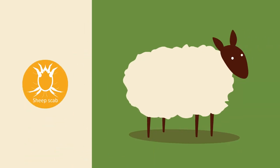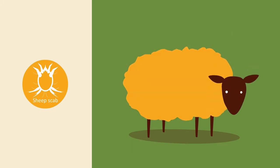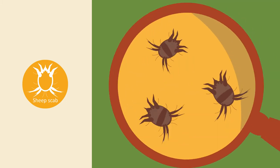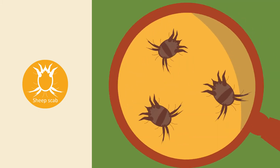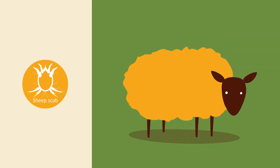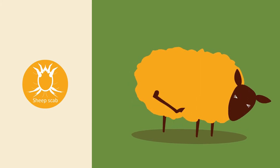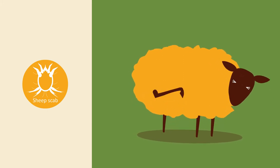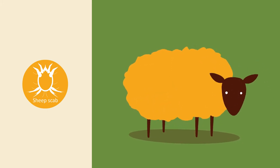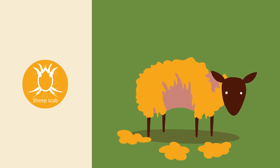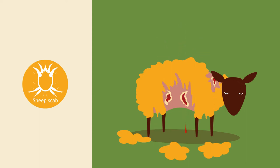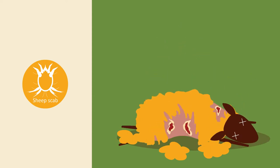Sheep scab is a highly contagious disease caused by the mite Psoroptes ovis, which infests the skin surface causing intense itching, restlessness, wool loss, yellowish scabs, bleeding wounds, loss of production, and in some severe cases, death.